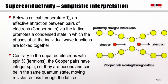Without pretending to explain the physics behind superconductivity, let's give a simplistic interpretation at the microscopic scale. Below a critical temperature Tc, there is an effective attraction between pairs of electrons called Cooper pairs, through the lattice, promoting a condensed state in which the phases of all wave functions are locked together. Unlike normal electrons with spin 1/2 (fermions), Cooper pairs have integer spin — they are bosons — and can therefore be in the same quantum state, moving resistancelessly through the lattice.